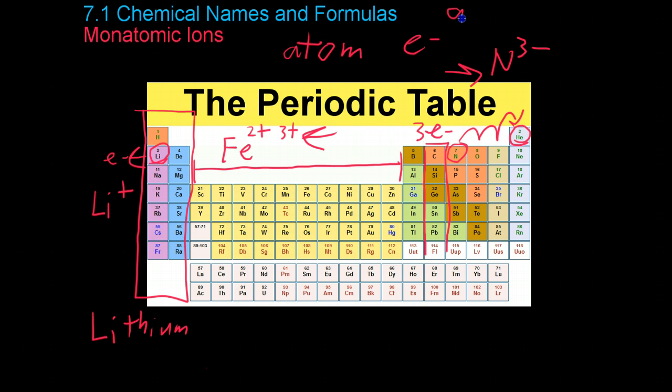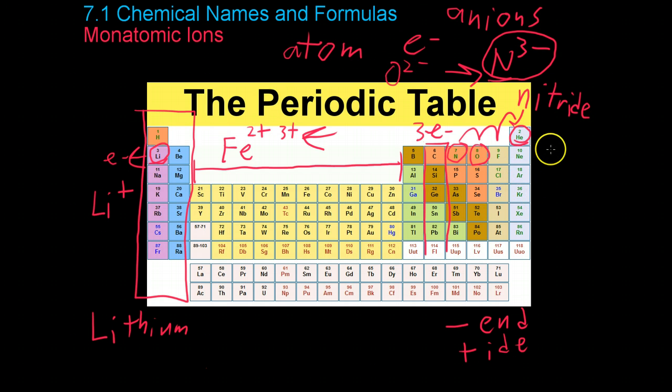However, when you get over here to the anions over on the right side of the table, it gets a bit more tricky. What you do is you take off the end of the name of the element and replace it with the suffix '-ide'. So for example, this nitrogen anion would be called nitride or an element or a compound rather that contained oxygen that was ionized, so it was O2- would have the suffix '-oxide', etc.